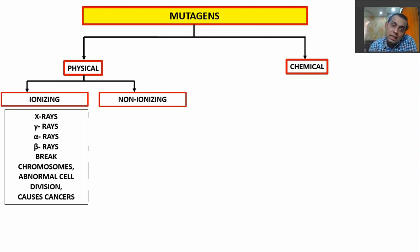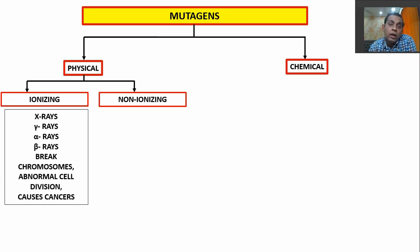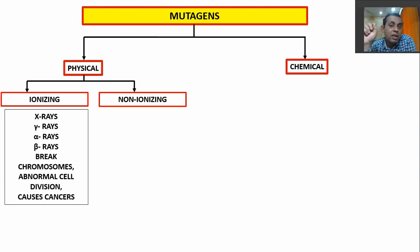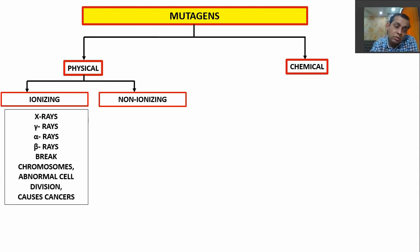That's why, when we go to X-ray machines or CT scans, relatives are not allowed inside. The reason is so that people accompanying patients don't get any mutation in their DNA. People who work there also have to take a lot of precautions to protect themselves from these radiations. These radiations can also cause cancers.